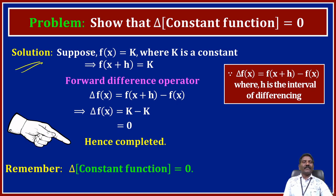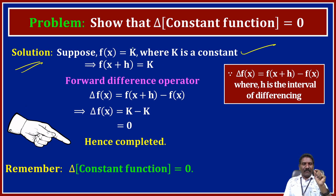Solution. Suppose f of x is equal to k, where k is a constant function. Since f of x is equal to k, f of x plus h — the increment in x — f of x plus h is also k.